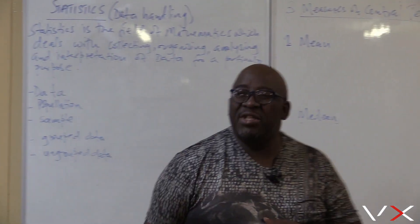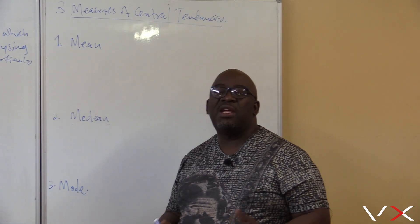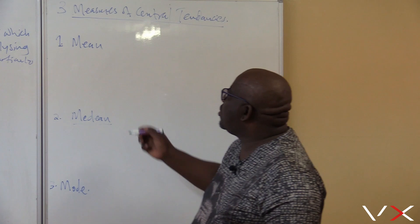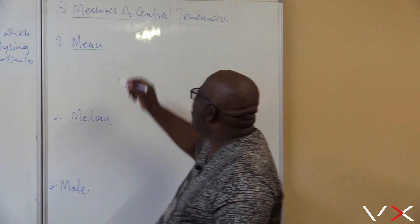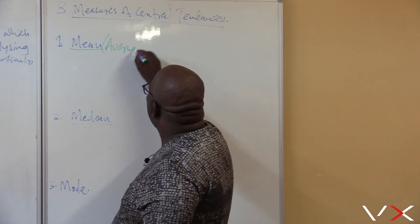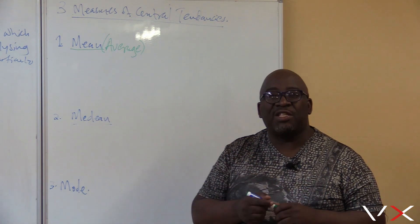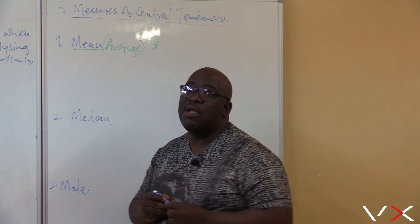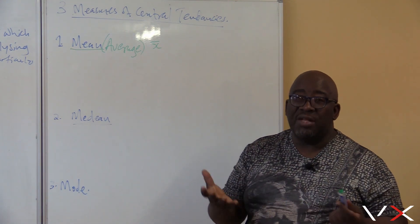Now, I want us to go straight to measures of central tendencies. We use this from as early as grade 8, but it comes out into our grade 12. The question, what is mean? A mean is nothing else but the average. It is the average. And there is a symbol that we use for this average. We call it the X bar. This symbol means average. X bar is the symbol that we use to represent the average.